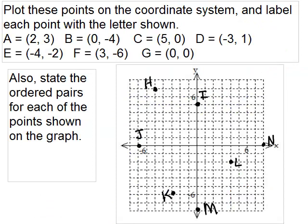So now it's your turn. I want you to plot these points on the coordinate system and label each point with the letters. So you're going to plot the points A, B, C, D, E, F, and G as shown. And also, notice I've labeled some points H, I, J, K, L, M, and N. I'd like you to write those as ordered pairs. So put the video on pause and see how you do.